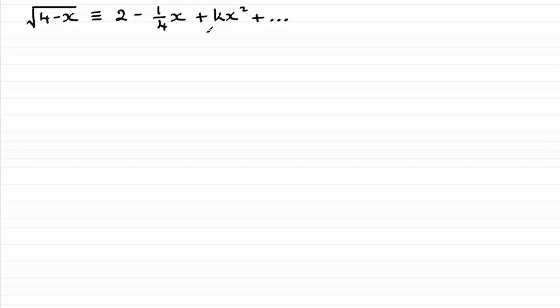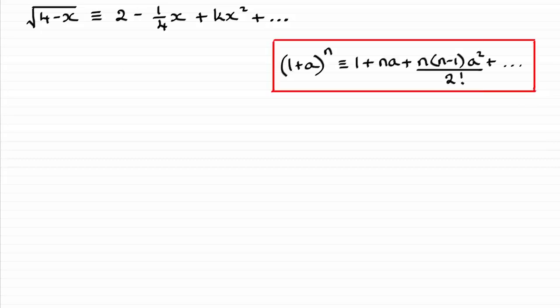So, how do we do this? Well, you should be familiar with the binomial expansion formula. Just as a reminder, if you've got something of the form 1 plus a raised to the power n, it's identical to this series. The next term would be n times (n-1) times (n-2) times a cubed all over 3 factorial and so on.